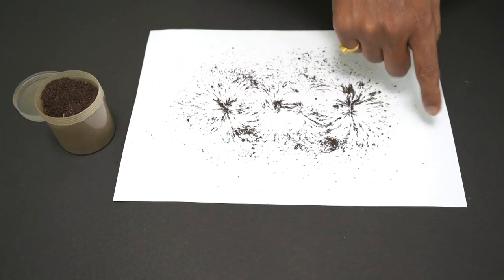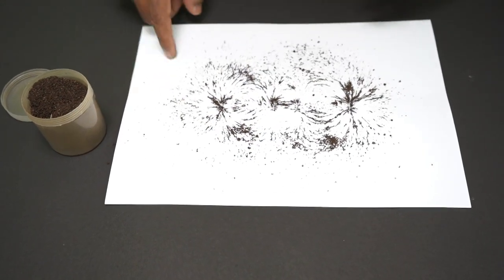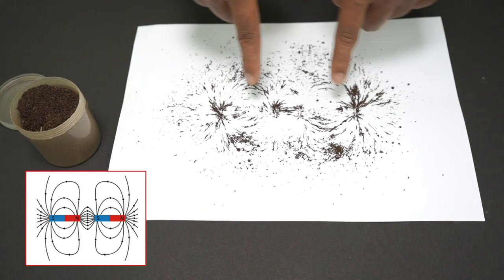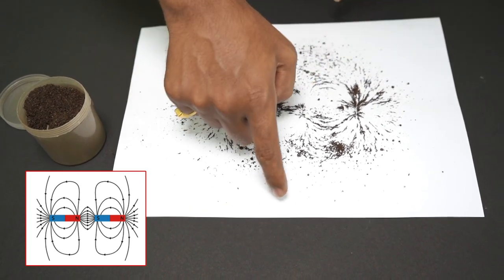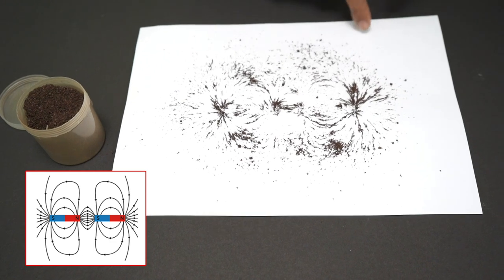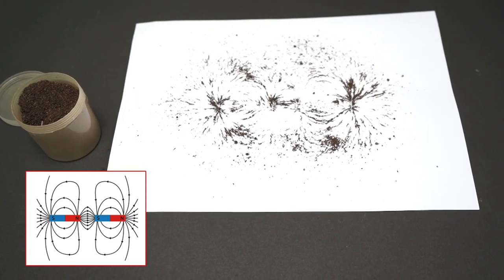Now, just tap. So can you see again this pattern? So these are the four different poles. And because of the different poles, there is a new pattern that we got.